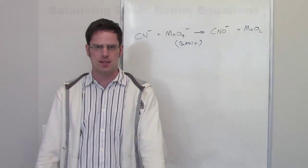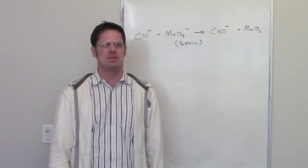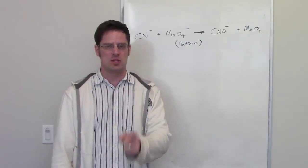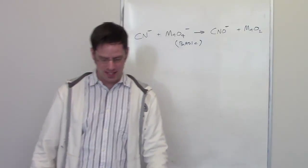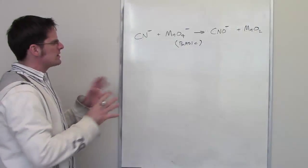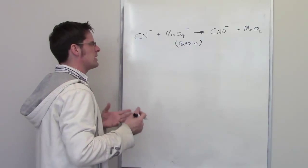Let's go back to our lecture slides and review the steps for doing this with basic conditions. The first step says to follow steps one through three for balancing a redox reaction under acidic conditions. Step one of acidic conditions says to divide the original redox reaction into two half-reactions, one for oxidation and the other for reduction.